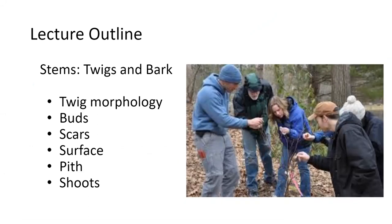Some forestry programs like Virginia Tech and University of Georgia have dendrology courses in spring as well as the fall. That seems especially challenging but you really learn to identify trees — you can identify them by twigs and also the bark. We gave some examples of bark in the last lecture. We'll talk about twig morphology and all the different parts and then some of the things that make them readily identifiable: buds, scars, surface, pith, and shoots.